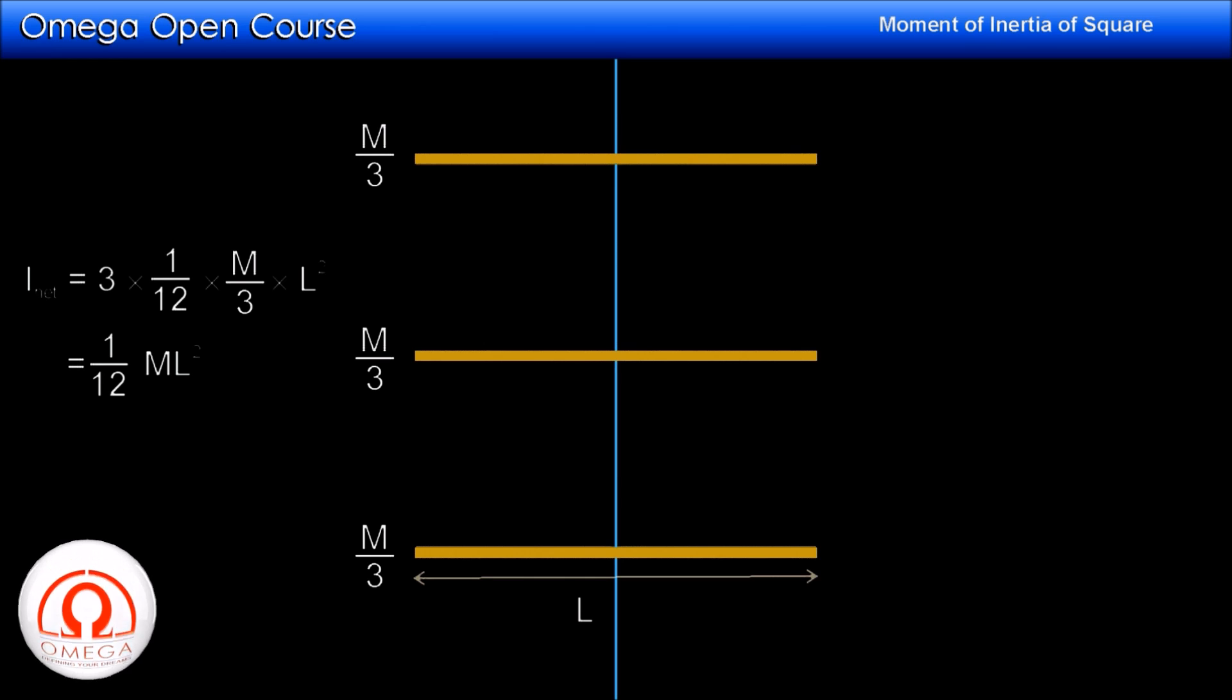So you can see, if we bring in more rods of the same length and reduce the mass of each rod so as to keep the total mass of the system at M, the moment of inertia of the system remains 1/12 ML².